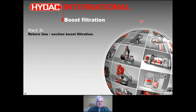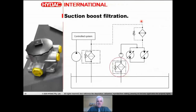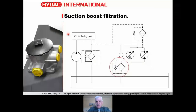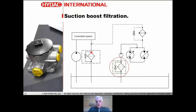There's one more interesting filter to cover — a combined return line and suction boost filter. On something like a loader, the wheel drive uses a closed loop transmission, but the bucket, lift, and steering use an open loop system. Mobile applications very commonly have multiple systems. Typically the open loop system has pressure and return filtration, while the closed loop transmission has suction or boost delivery filtration.